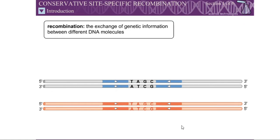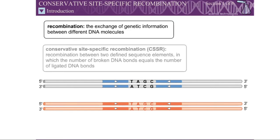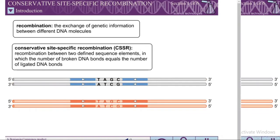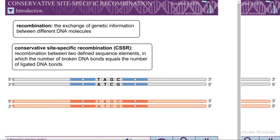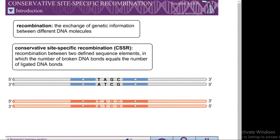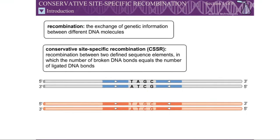Conservative site-specific recombination, or CSSR, is recombination between two defined sequence elements called site-specific recombination sites. There are two families of proteins responsible for site-specific recombination: the serine recombinases and the tyrosine recombinases.